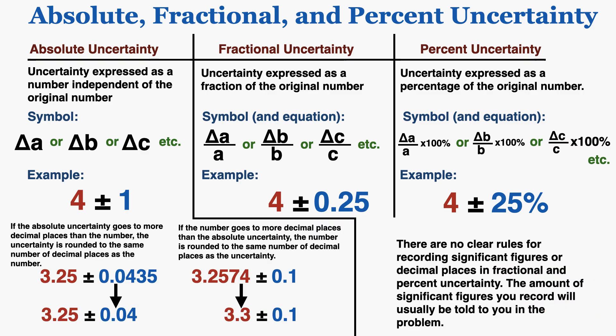There are rules for decimal places in absolute uncertainty, but not for fractional and percent uncertainty. If the absolute uncertainty goes to more decimal places than the number, it's rounded to the same number of decimal places as the number. If the number goes to more decimal places than the uncertainty, the number is rounded to match the uncertainty. The lowest decimal place of both must always match. For fractional and percent uncertainty, there are no clear rules for significant figures — the problem will usually tell you, and if not, you can write the number of sig figs you prefer.